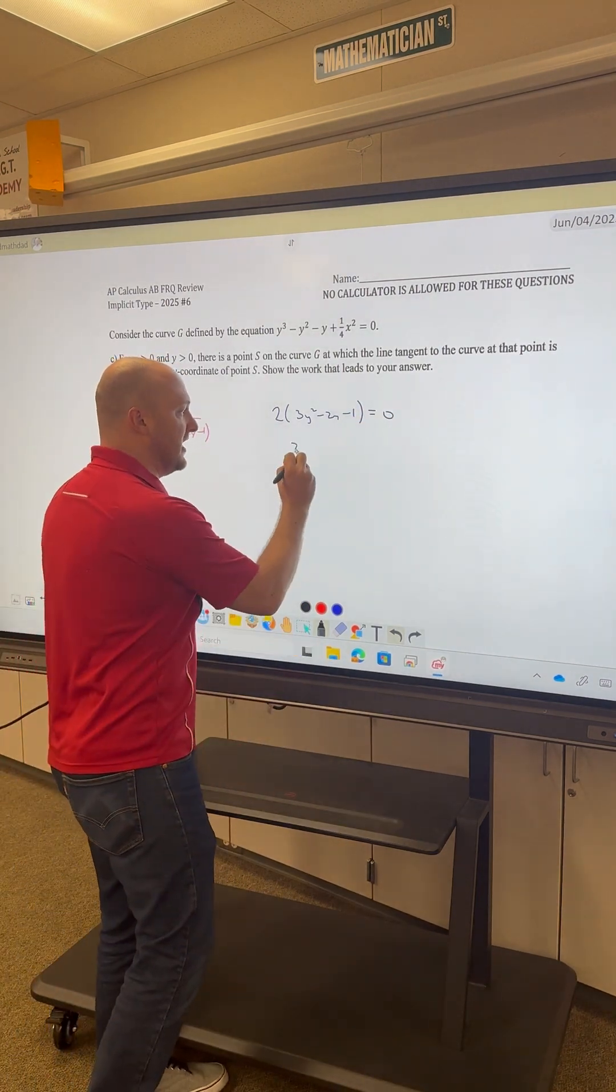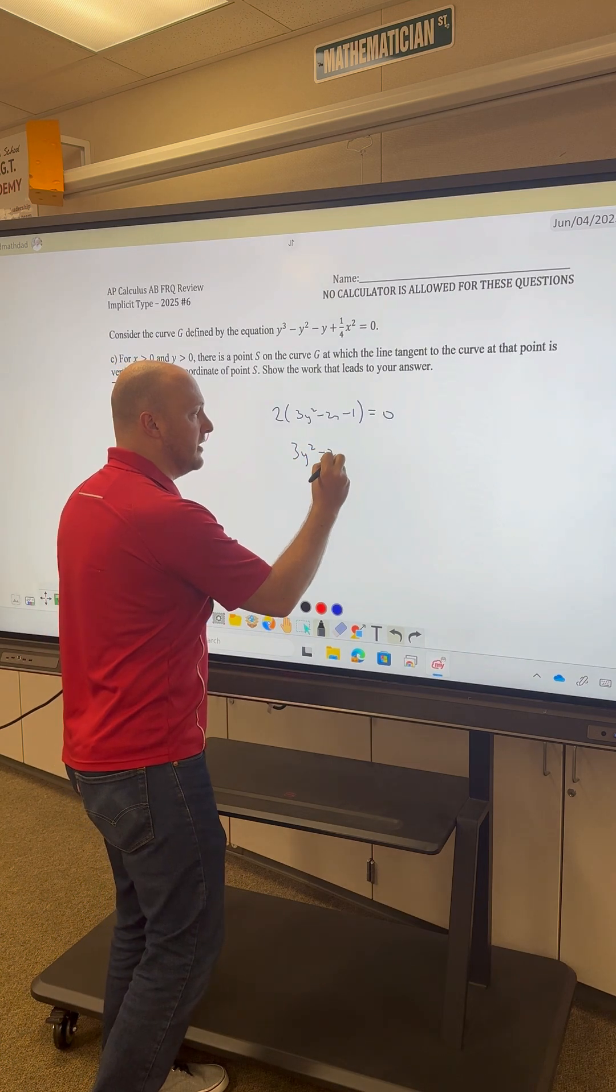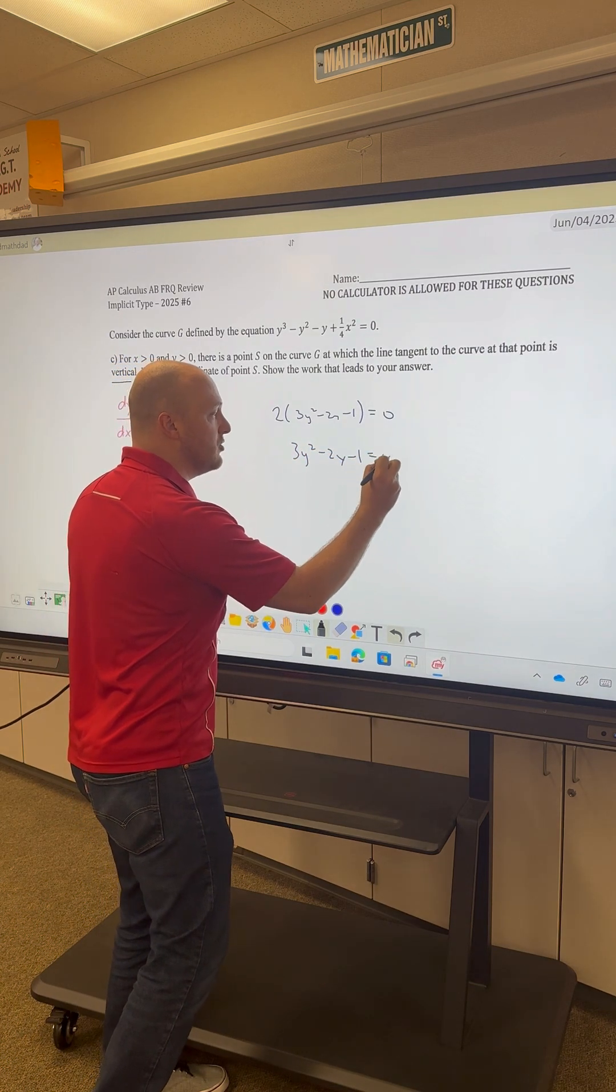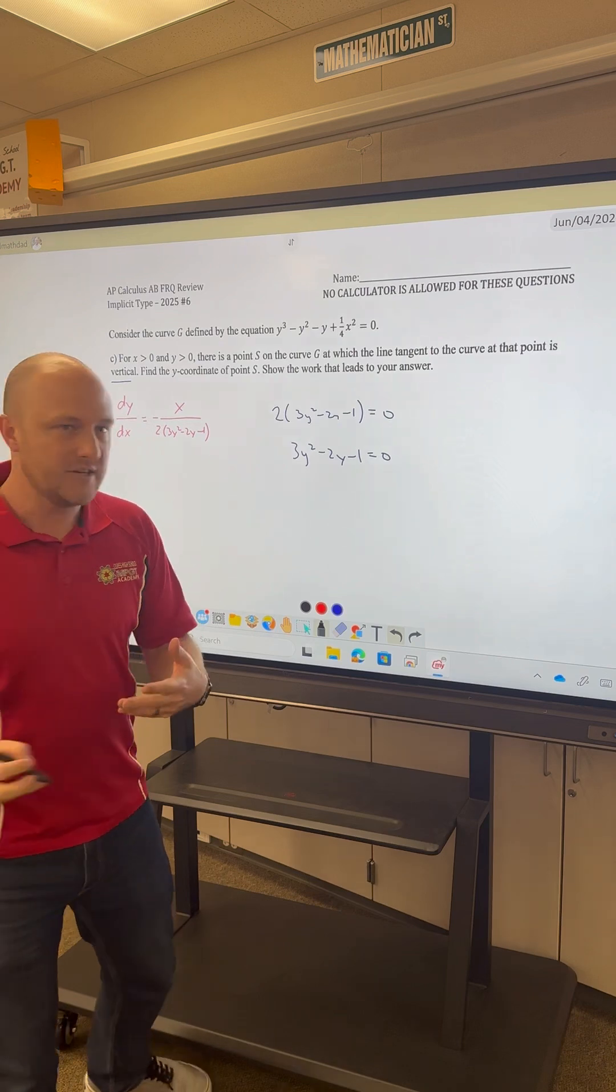We'll divide by 2 on both sides to give us 3y squared minus 2y minus 1 equals 0. And then we can factor this.